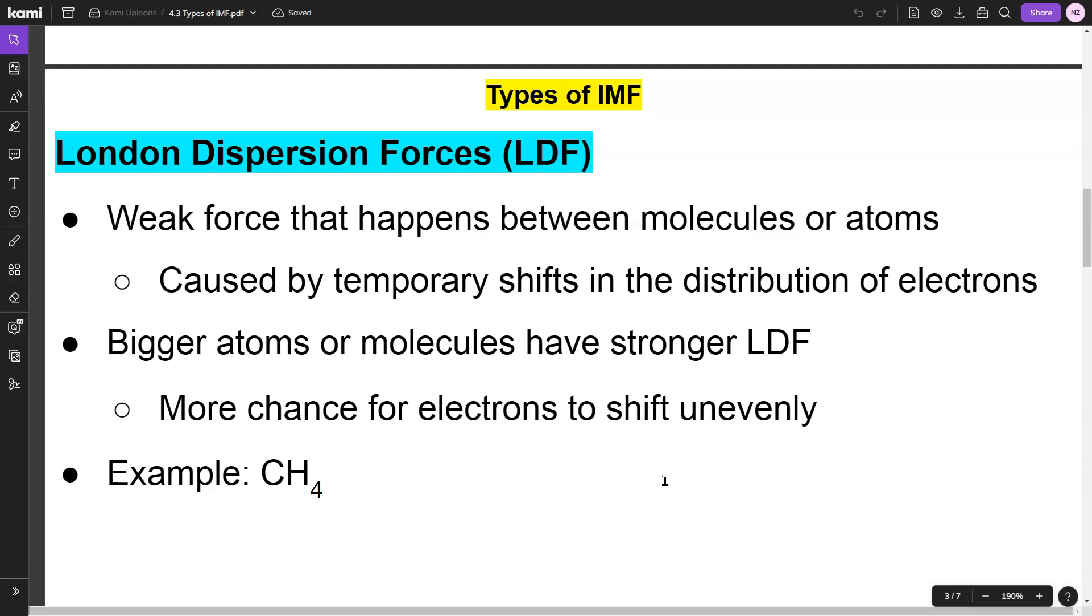In our atom, we've got electrons orbiting the nucleus, and at any given moment, you have an uneven distribution of electrons. You're going to have more electrons on one side of the atom than the other, and that creates a temporary dipole.